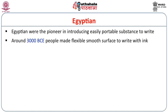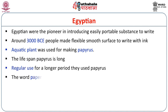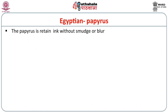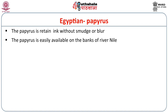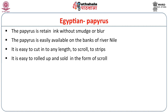The next stage is Egypt. The Egyptians were the pioneers in introducing an easily portable substance to write on. Around 3000 BCE, people made a flexible, smooth surface to write with ink. An aquatic plant was used for making papyrus. The lifespan of papyrus is long, and it was used regularly for a long period. The word 'paper' that we use today is derived from papyrus. Papyrus retains writing without smudge or blur, and it is easily available on the banks of the River Nile.